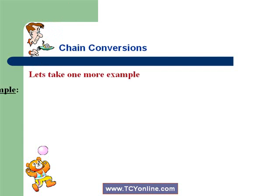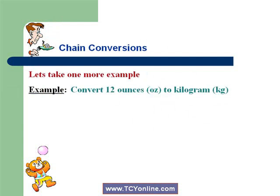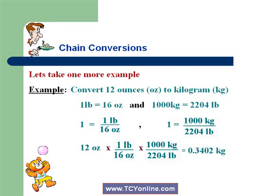Now let's look at one more example. We need to convert 12 ounces to kilograms. We are aware that 1 pound equals 16 ounces, and 1000 kilograms equals 2204 pounds. So first write a fraction equal to 1 by writing the equation with the desired unit on top and the given unit on bottom. For 1 pound equals 16 ounces, we write 1 equals 1 pound over 16 ounces. While for 1000 kilograms equals 2204 pounds, we write 1 equals 1000 kilograms over 2204 pounds. Now we need to convert 12 ounces to kilograms.